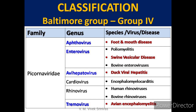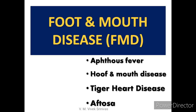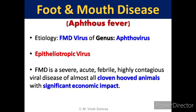In this lecture, we will discuss in detail on FMD. Foot and mouth disease — the other names for this infection are Aphthos fever, hoof and mouth disease, tiger heart disease, and aftosa. The disease is caused by the FMD virus of genus Aphthovirus. Based on tissue tropism, this virus targets epithelial tissues, so they are termed as epitheliotropic virus.